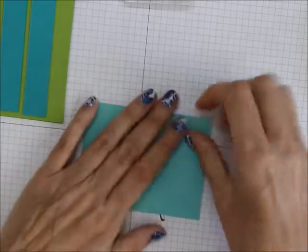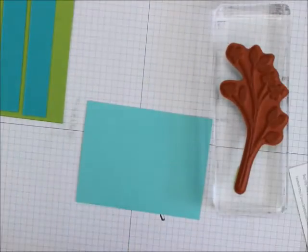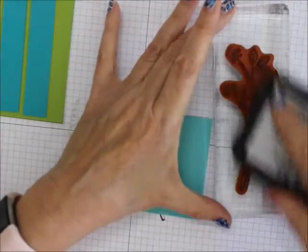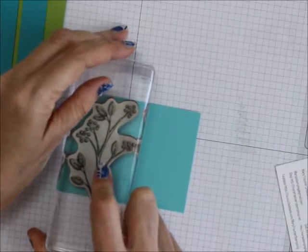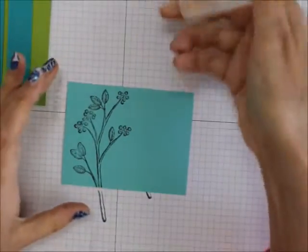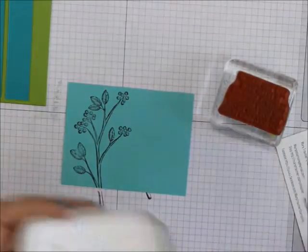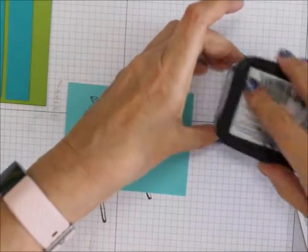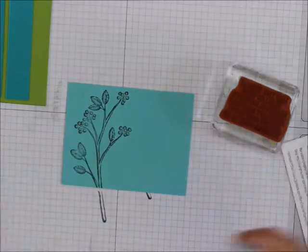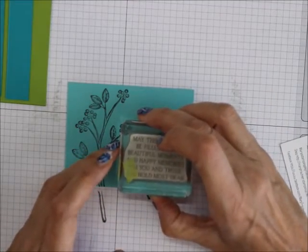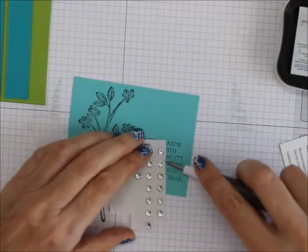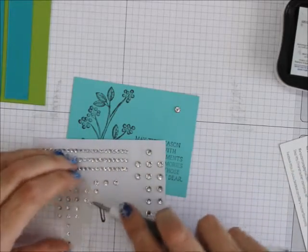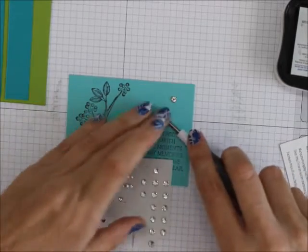Now I'm going to just set that aside. Now I'm going to come back and I'm going to take and stamp on the coastal cabana. And then I am going to take some rhinestones and I'm going to place them around.